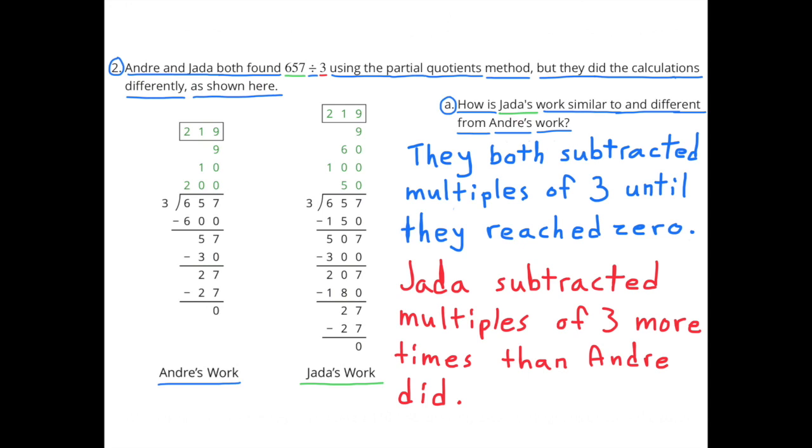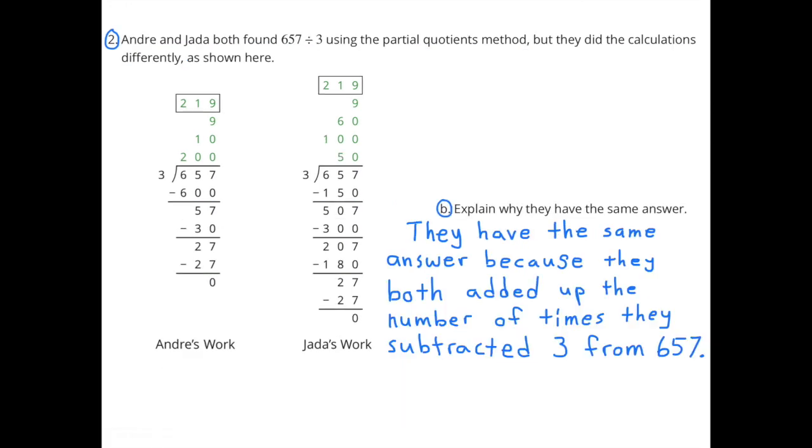They both subtracted multiples of 3 until they reached 0. Jada subtracted multiples of 3 more times than Andre did. Part B: Explain why they have the same answer. They have the same answer because they both added up the number of times they subtracted 3 from 657.